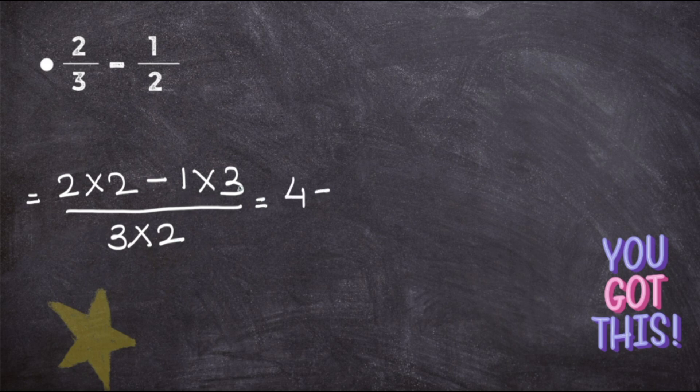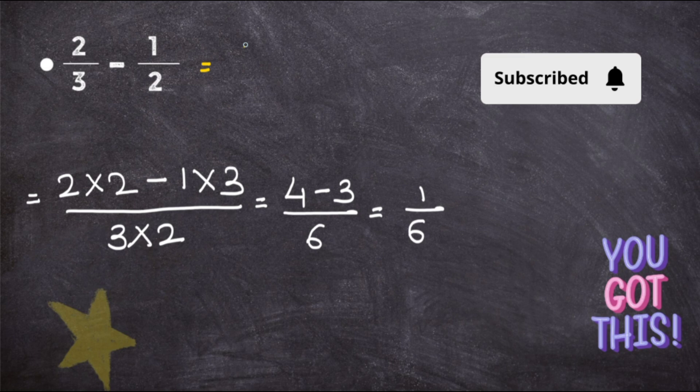Now, 2 into 2 gives you 4 minus 1 into 3 gives you 3 upon 3 times 2 is 6. 4 minus 3 is 1 upon 6. So what is your answer? The answer for 2 upon 3 minus 1 upon 2 will be 1 upon 6.